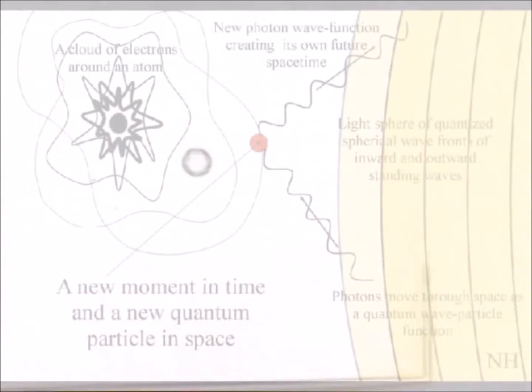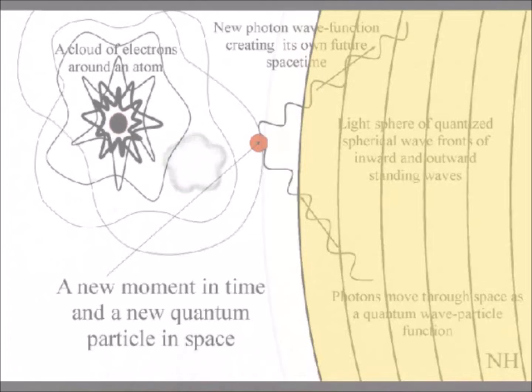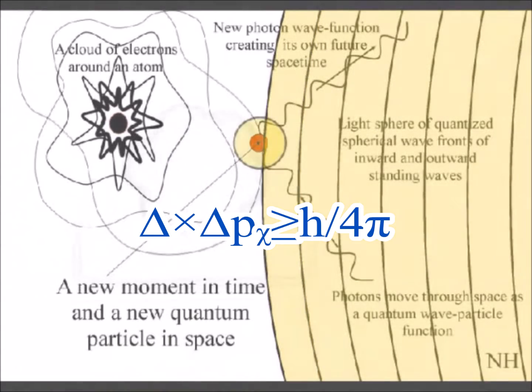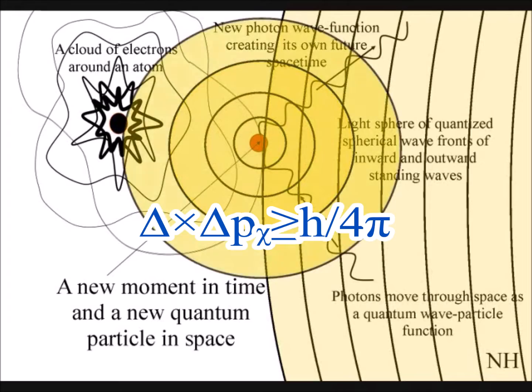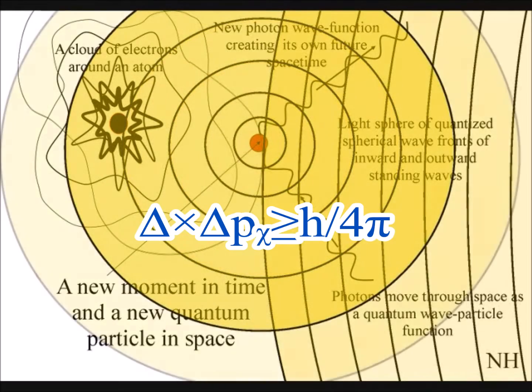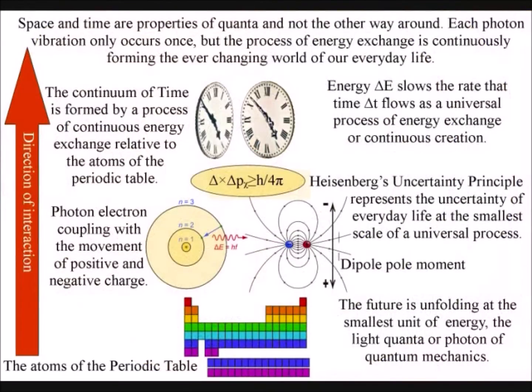As light waves interact with the electron probability cloud of an atom, it forms a photon-electron coupling, or dipole moment. This sets the angular momentum of the quantum spin of the electron at a set position in space, at a set moment in time. This forms what is called a magnetic dipole moment.